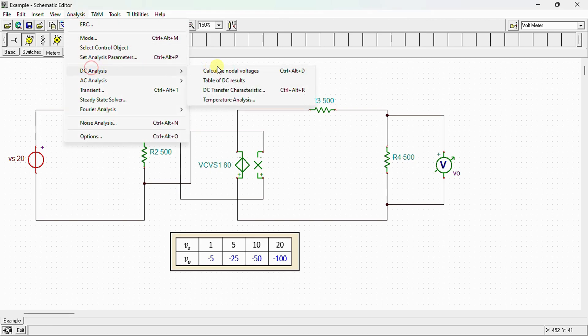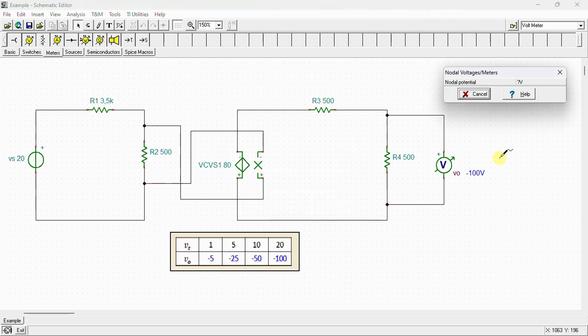we go to Analysis, DC Analysis, Calculate Nodal Voltage, and we have -100V. That means the gain vo/vs is -5. That's the correct answer. We have verified our calculation using SPICE simulator.